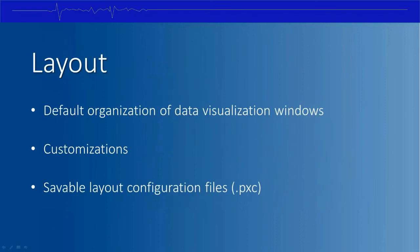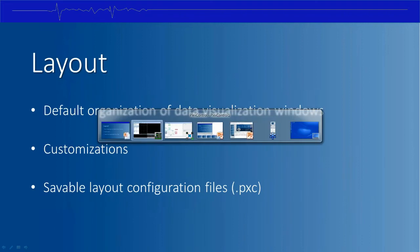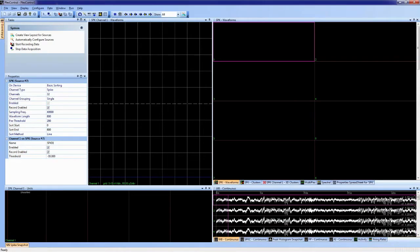The first topic is layout. Within Omniplex, each data type has its own visualization window displayed with the default layout. The user can customize a layout and highlight only the most useful windows. It's possible to save custom layouts to a file called a PXC file. Let's jump right into Plex Control — this is the default view, where each black window displays a different type of data.